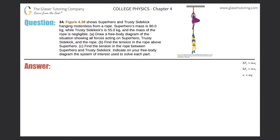Problem 34: Figure 4.38 shows superhero and trusty sidekick hanging motionless from a rope. Superhero's mass is 90 kilograms, trusty sidekick's is 55 kilograms, and the mass of the rope is negligible. Draw a free body diagram showing all forces acting on superhero, trusty sidekick, and the rope. There are three main points of interest here.